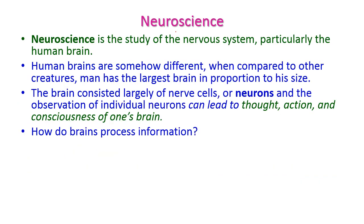The next foundational subject is neuroscience, which is the study of the nervous system, particularly the human brain. We are going to create a system that should be an alternative to human beings, so the study of the human brain is important. Humans have the largest brain in proportion to body size. The brain consists largely of nerve cells, otherwise called neurons, and observation of individual neurons can lead to thought, action, and consciousness. By using neuroscience, we can answer: How do brains process information?